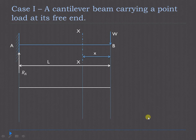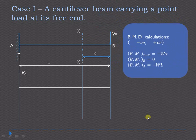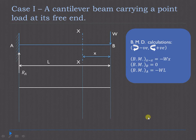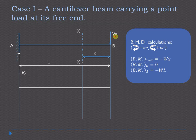Now let us consider the bending moment calculation for the same case. The convention used here is: clockwise is negative and anticlockwise is positive. The bending moment at section XX — W is the load and x is the perpendicular distance — will produce a clockwise moment about section XX. Clockwise moment is considered negative, so the bending moment is minus W into x.